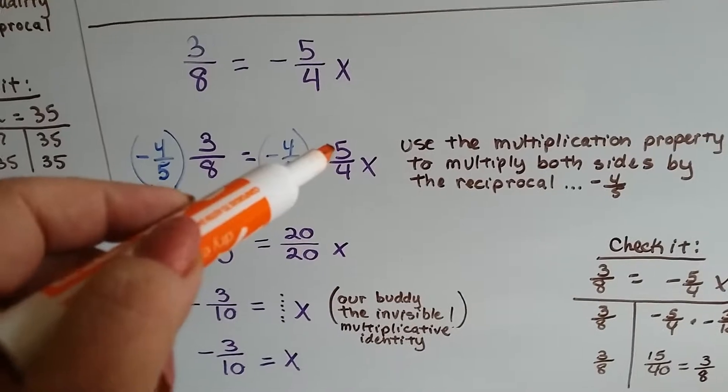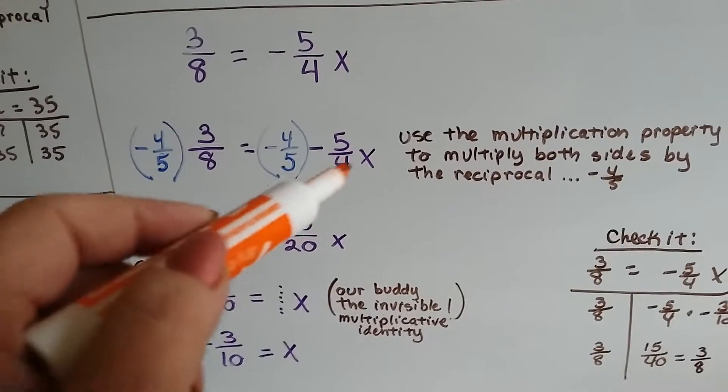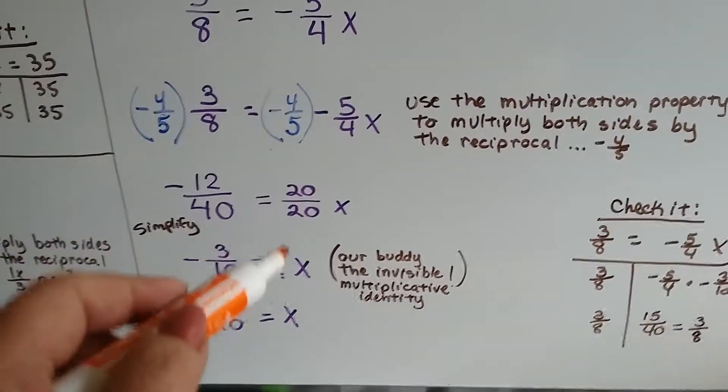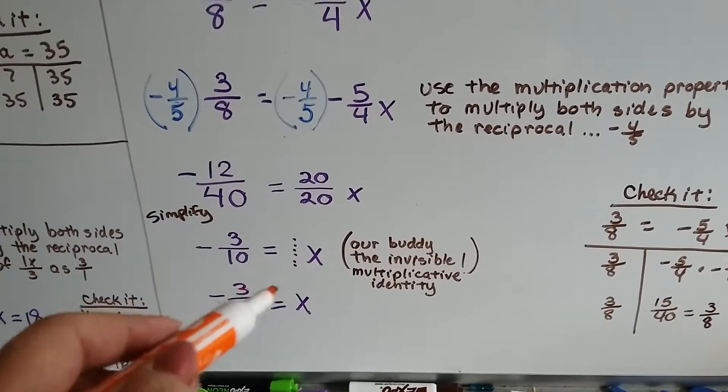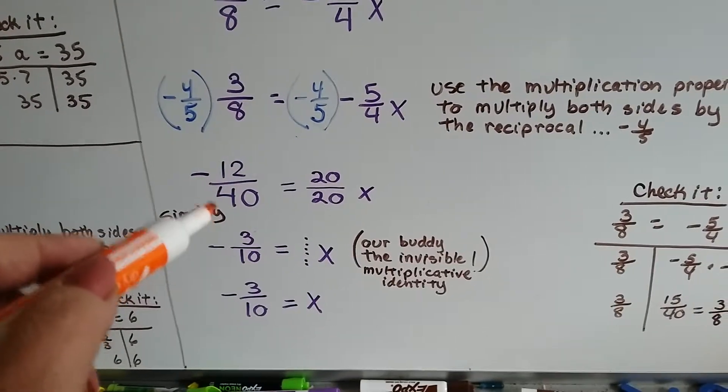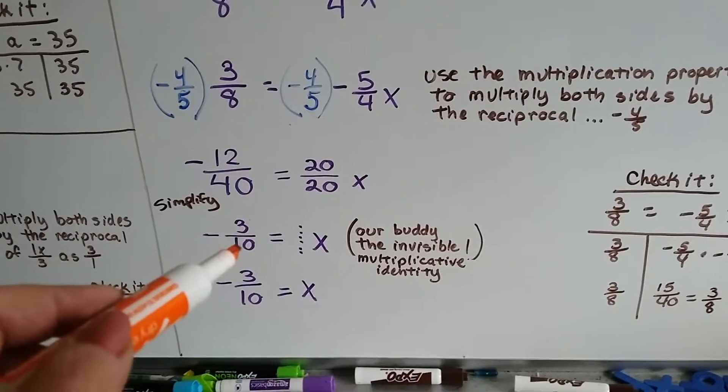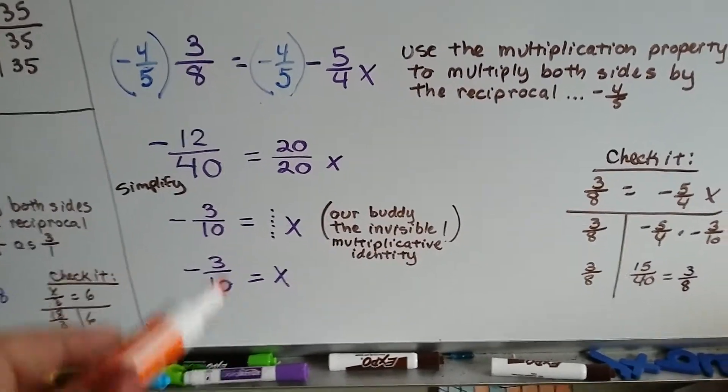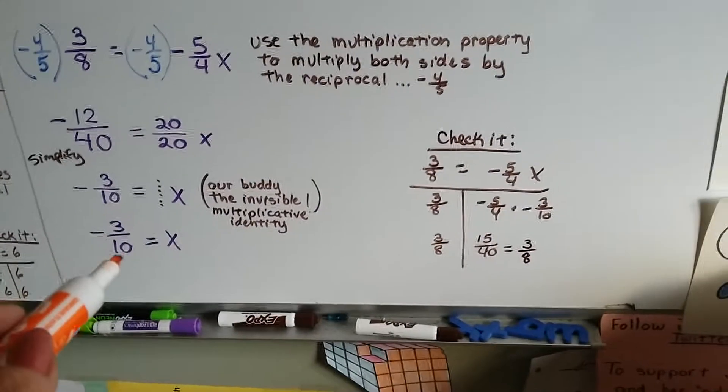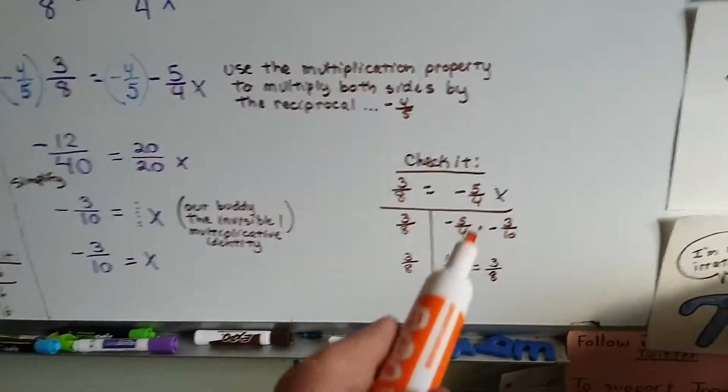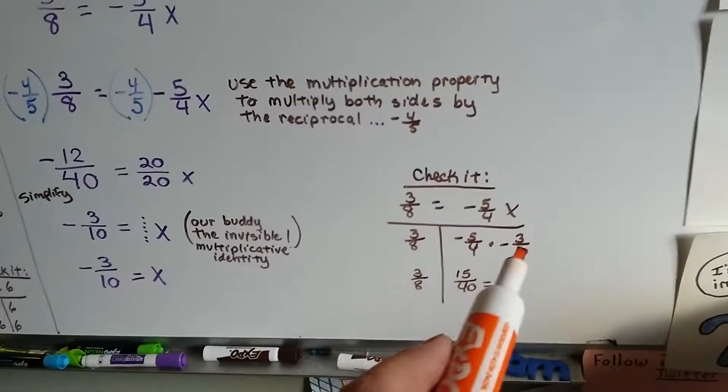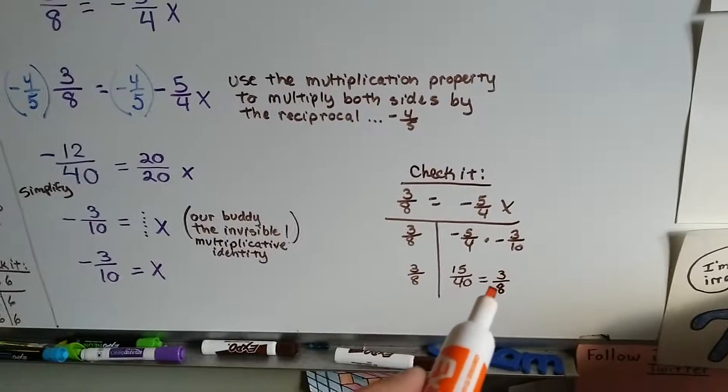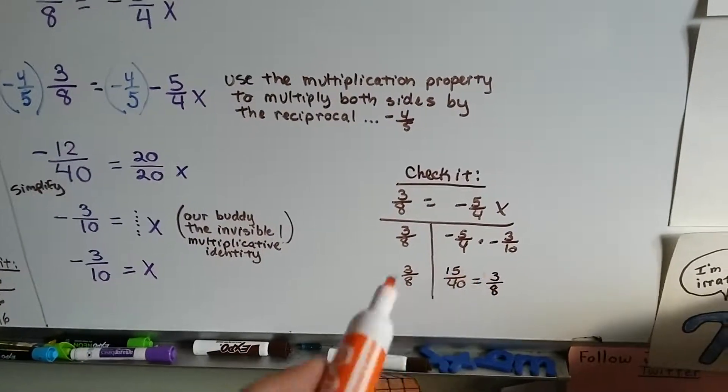We're going to multiply a negative to a negative. So negative 4 times negative 5 is a positive 20. We got 20 over 20 and that's our buddy the invisible one. Same numerator and denominator. We simplify this. 4 can go into both 12 and 40 as a 3 tenths, and now we have negative 3 tenths equals x. All we have to do to check it is to plug a negative 3 tenths in where the x was. We multiply negative 5 fourths times a negative 3 tenths. We get 15 over 40 and that equals 3 eighths when we simplify it. We did it correctly.